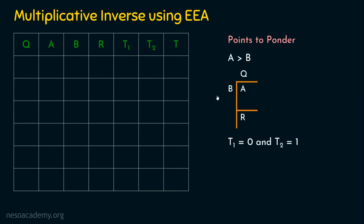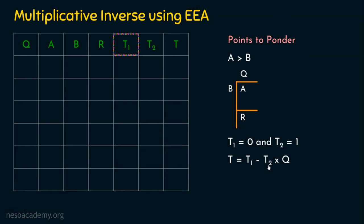The new things introduced here are T1 and T2. For the first iteration, T1 and T2 values are 0 and 1 respectively — place 0 in T1 and 1 in T2. Then we compute T using the formula: T = T1 − T2 × Q. I'm not going to explain how we derive this; we are going to just use this extended Euclidean algorithm to find the multiplicative inverse. So just use this formula: T = T1 − T2 × Q.